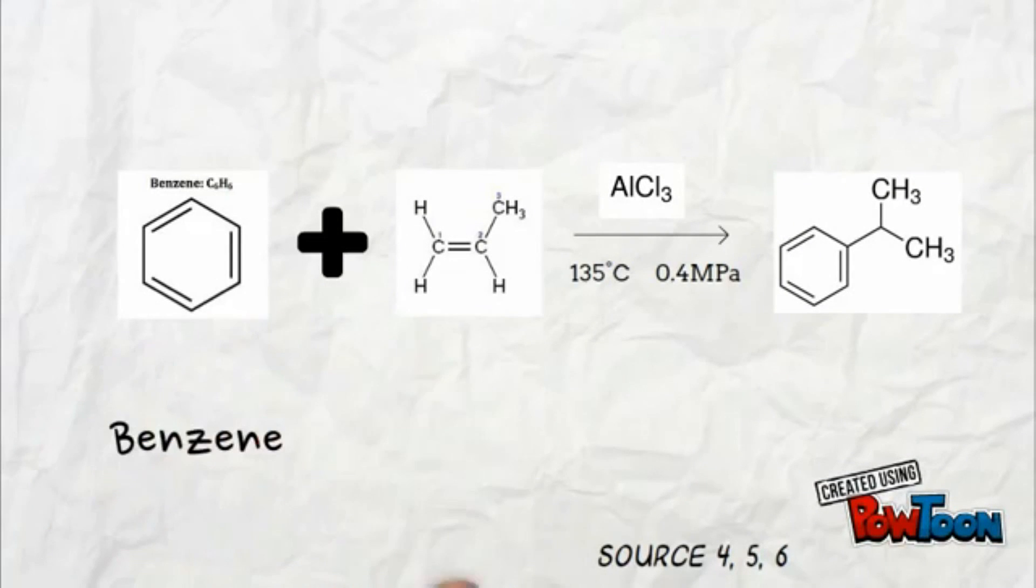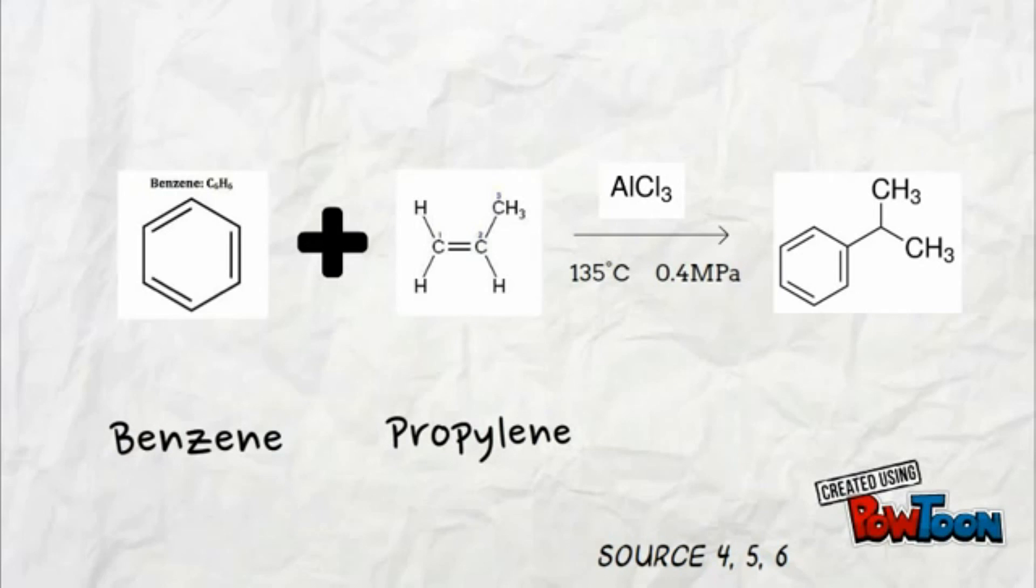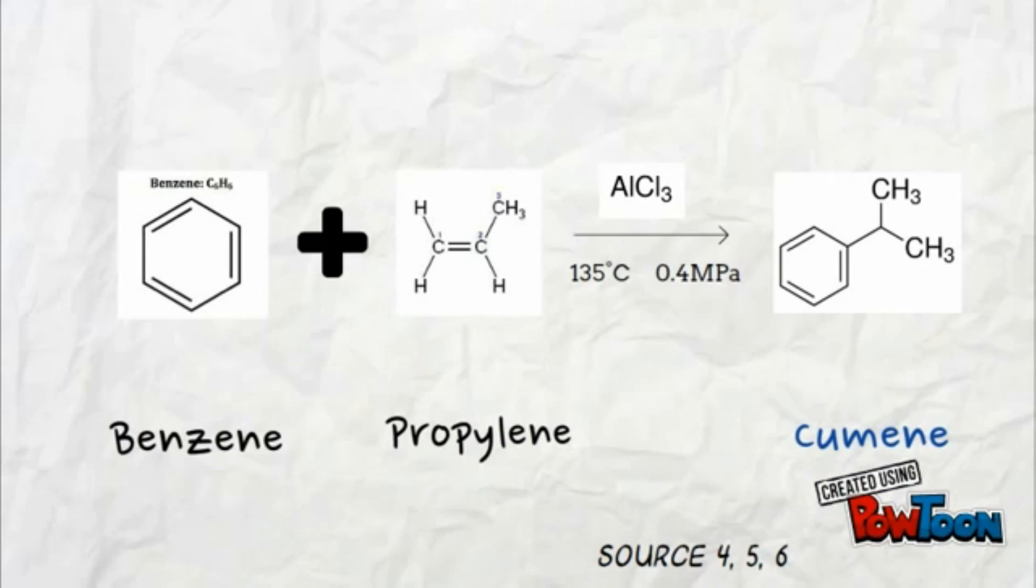Dry benzene, fresh and recycled, and propylene are mixed in the alkylation reaction zone with aluminum chloride and hydrogen chloride catalyst at a temperature of less than 135 degrees Celsius and a pressure of less than 0.4 MPa.